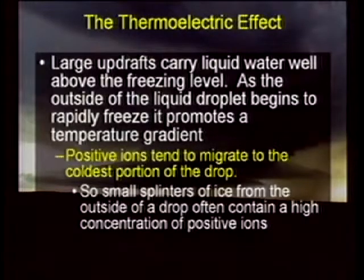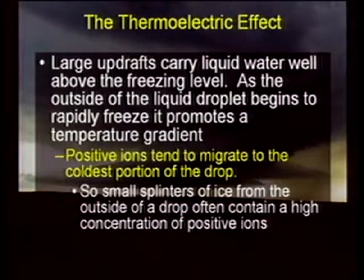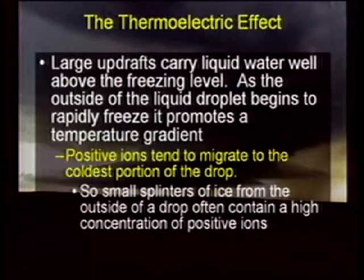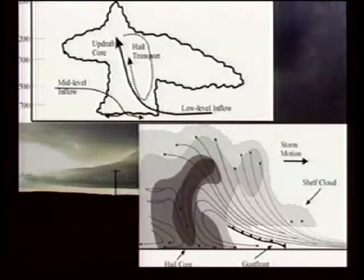We then transitioned into some things related to thunderstorms, one of which is lightning, and the concept I introduced was the thermoelectric effect. Think about droplets that are carried above the freezing level — they begin to freeze, they develop their own thermal gradient, and the positive ions tend to migrate toward that cold outer portion of that droplet. As they freeze, they collide, they splinter, and a lot of that ice is carried near the top of the storm while the larger part of the droplet remains in the middle or lower part of the storm. And again, you get the separation of charges — this natural battery.